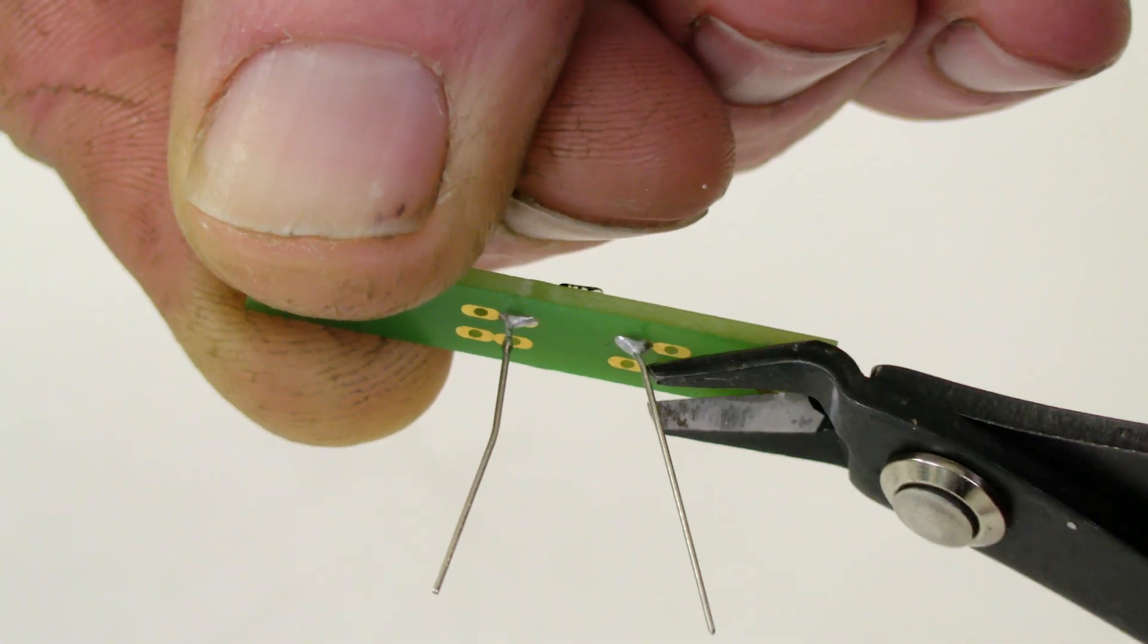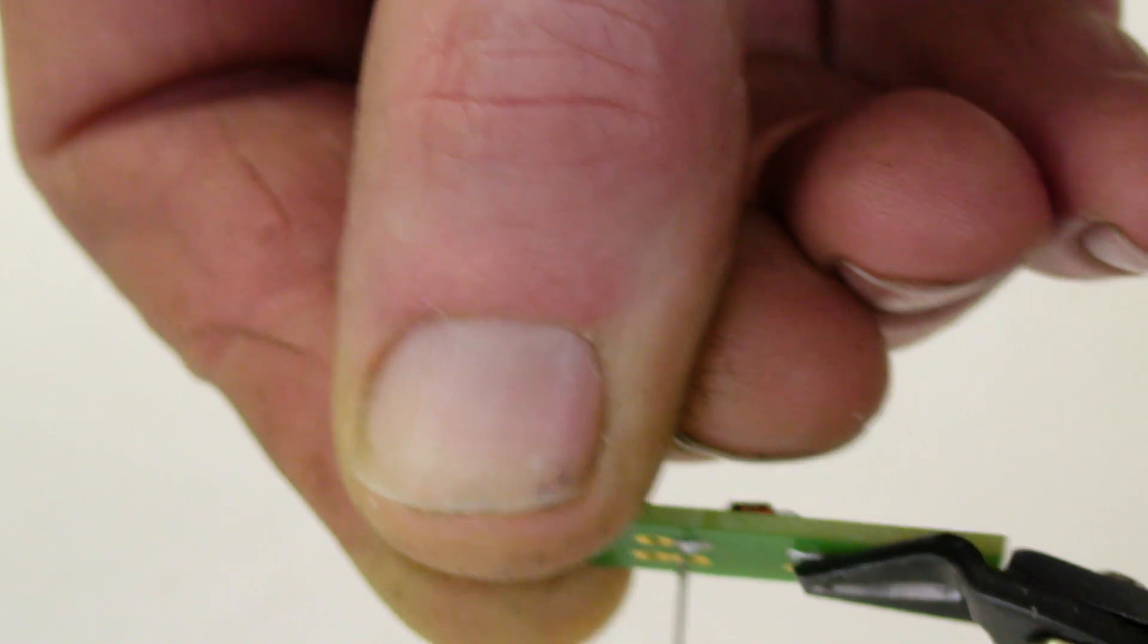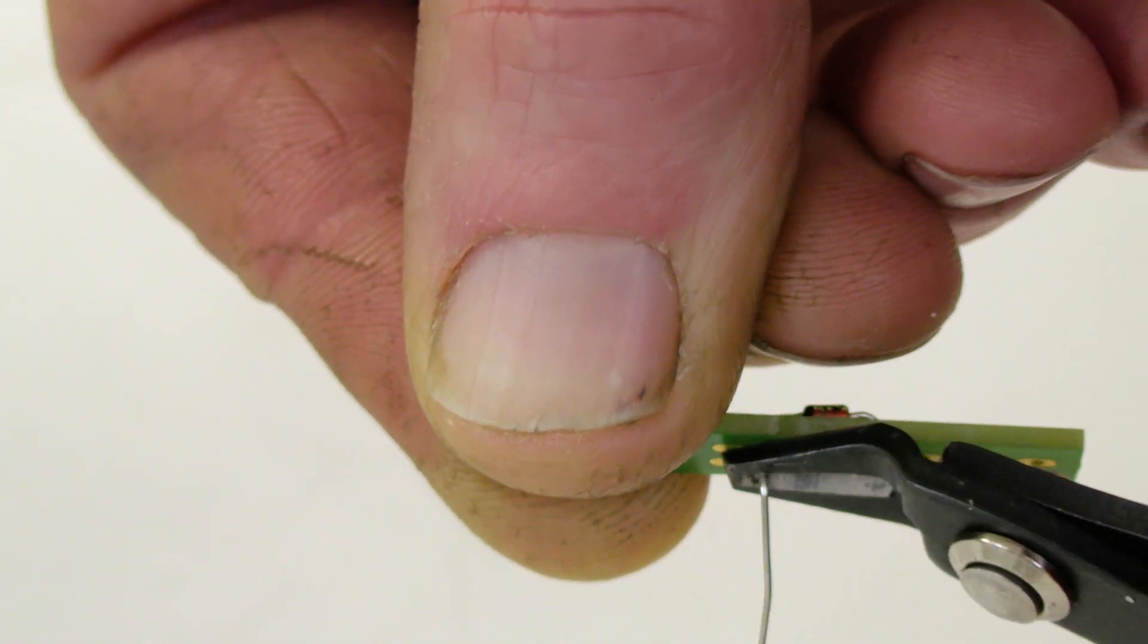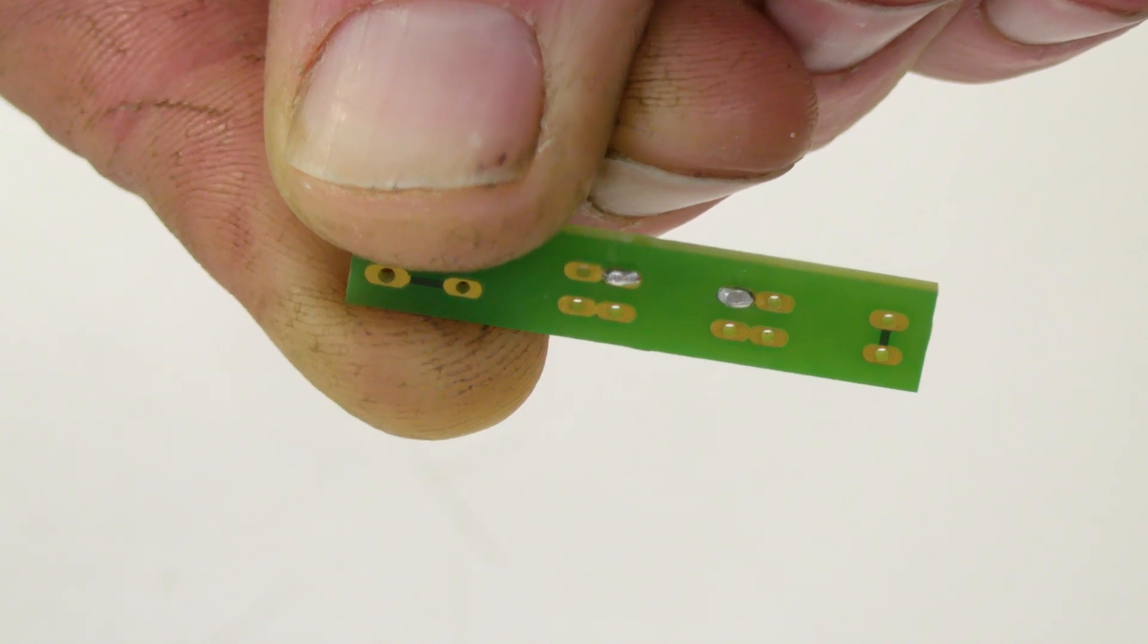Flip the board back again. Grab a wire cutter and trim off the legs just above the joint. Make sure to face the leg towards the desk so that it does not fly towards your face while cutting.